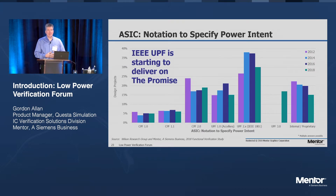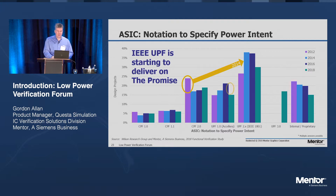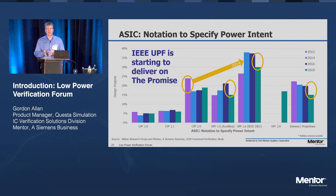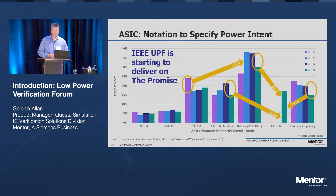Finally, a look at industry standardization of UPF and related technologies in low power design and verification. Back in 2012–2014, there was quite a shift from the older CPF flow to UPF 2.x, and by 2014 most CPF users had transitioned. In the last two years, 2016 to 2018, early adopters of UPF 1.0 and 2.0, as well as teams using proprietary solutions, had shifted to UPF 3.0. UPF is finally starting to deliver on the promise of aiding productivity and thoroughness of verification in the area of low power.